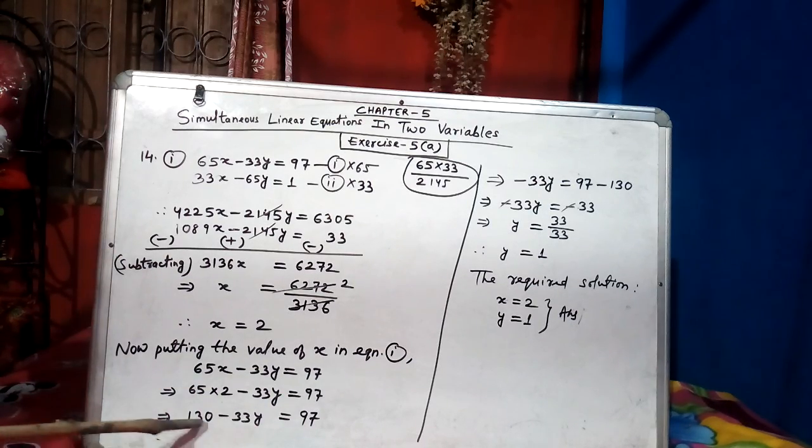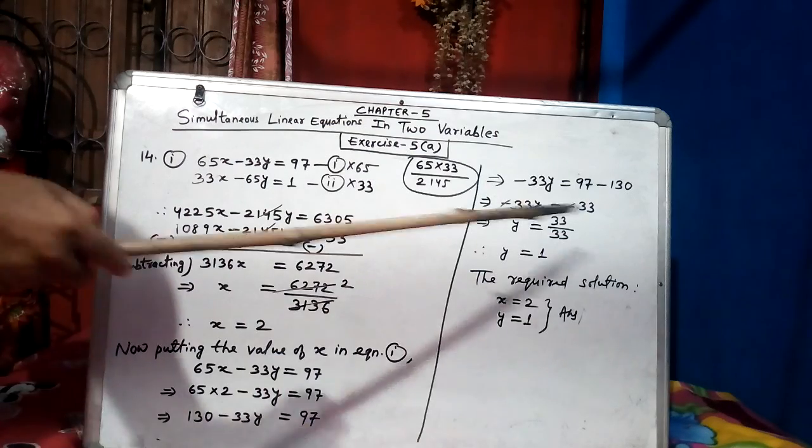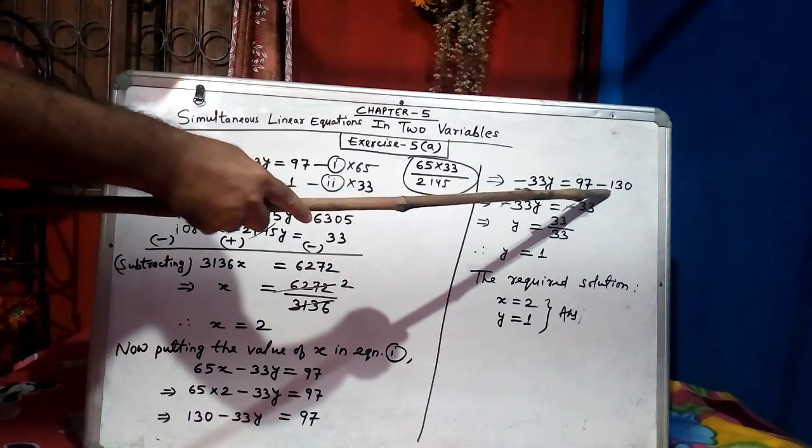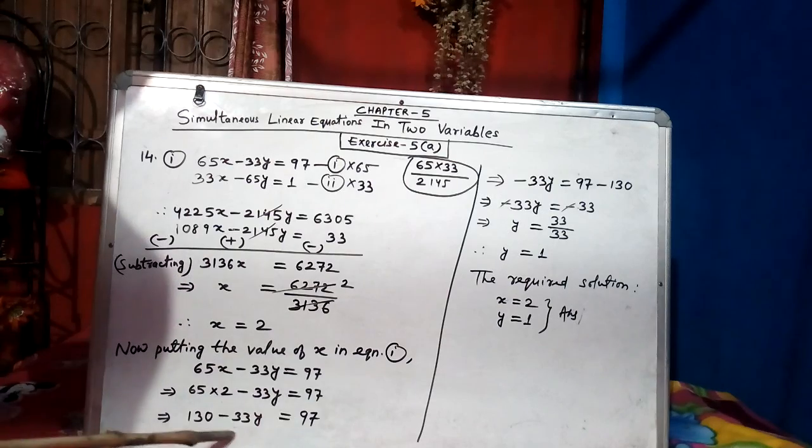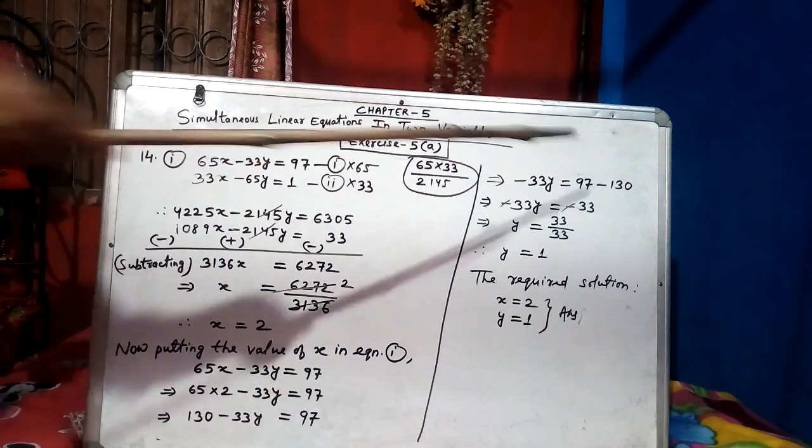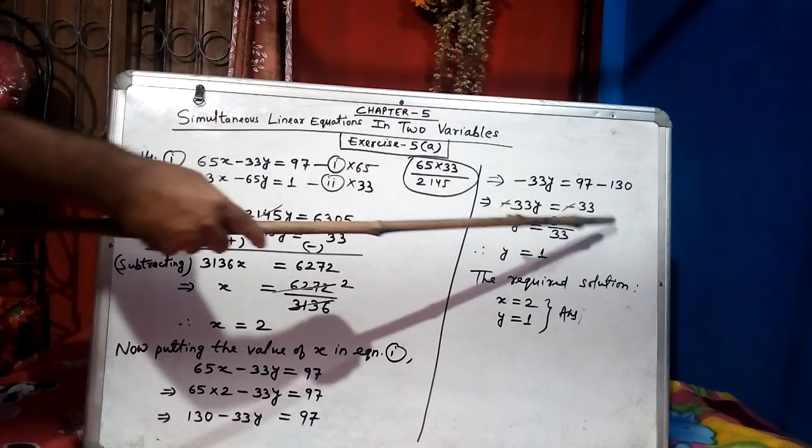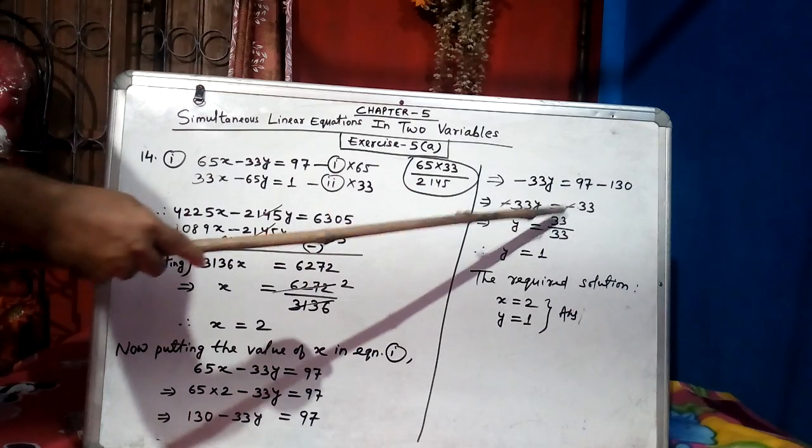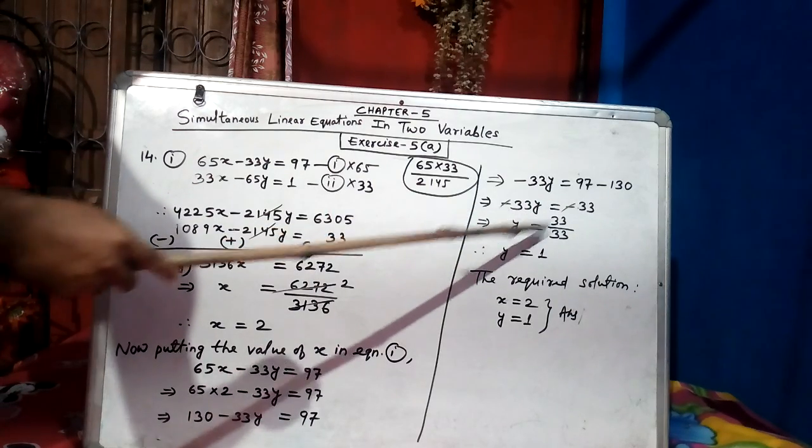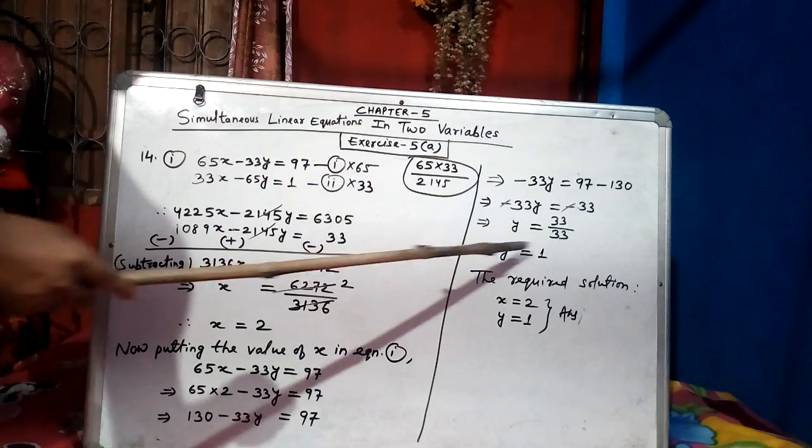Now, I have to find the value of y. So 130 will shift to the right hand side. So when plus 130 will go that side, it will become minus 130. And minus 33 is in the same position. So minus 33y. And 97 minus 130 is minus 33. Now, minus 33y equal to minus 33. Minus minus could cancel. y equal to 33 by 33. Therefore, y equal to 1.